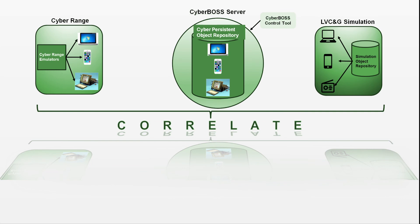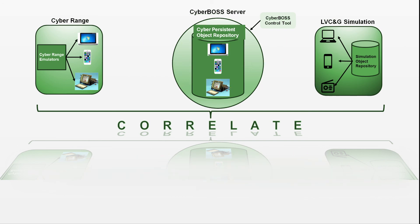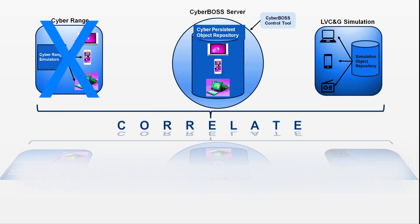CyberBoss correlates the modeling of cyberspace equipment and devices between federated LVC&G applications that are registered with its network. This correlation connects disjoint cyberspace data across the LVC&G systems in a synthetic battlespace. It also correlates between the simulated environment and the cyber ranges. CyberBoss correlation results in a single logical representation of the cyber terrain elements shared by all connected systems. Actions in the kinetic world impact the cyber world, and cyber world changes are reflected in the kinetic world.